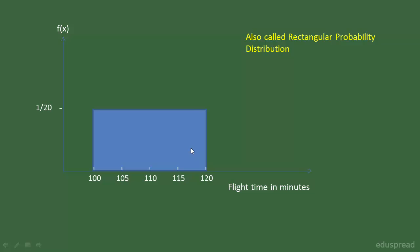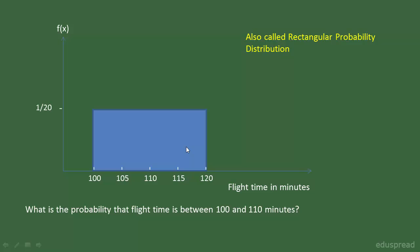Because we are dealing with a continuous random variable here, a question like what is the probability that the value of x will be equal to 115 won't make sense. An acceptable probability question would be: what is the probability that the flight time is between 100 and 110 minutes? Because the random variable is uniformly distributed over the interval 100 to 120, the probability of x lying between 100 and 110 is equal to 0.50.